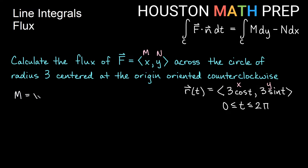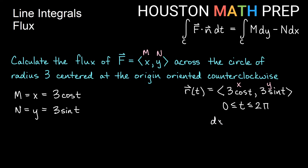If m equals x and x is 3 cosine of t from the parameterization, then m is 3 cosine of t. If n is y and y is 3 sine of t, then n is 3 sine of t. Since x is 3 cosine of t, dx is negative 3 sine t dt. And since y is 3 sine t, dy is 3 cosine of t dt.